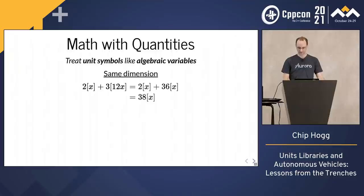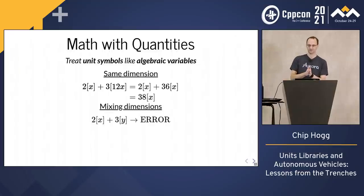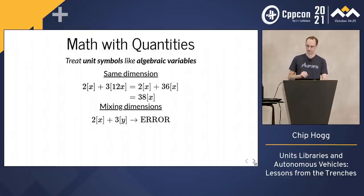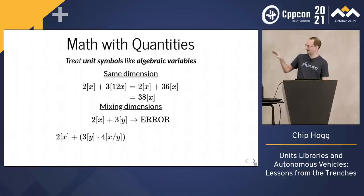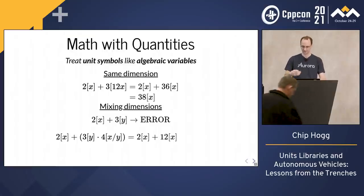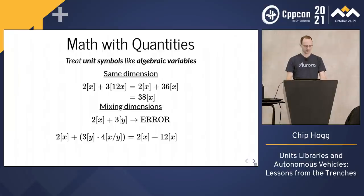Now, take another unit Y which has a different dimension than X. In this case, trying to add these quantities is meaningless. But remember, we can do algebra with quantities. So if you have an X per Y unit, you can multiply by that, bringing everything into X units, and then you can simply add.